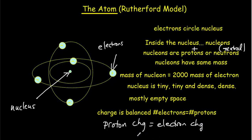The value of that charge is 1.6 times 10 to the negative 19 coulombs. And that's the basic structure of the atom: electrons orbiting around a tiny, dense nucleus.